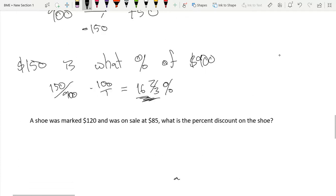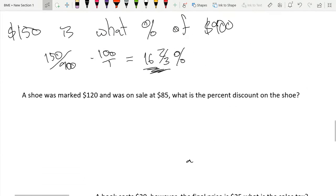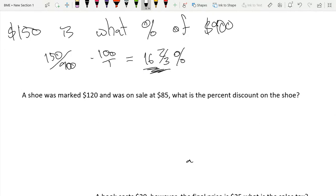Now I'm going to go back to doing it the first way. This problem below, we're not doing. It's just our last problem. So a shoe was marked $120 and was on sale at $85. What is the percent discount on the shoe?